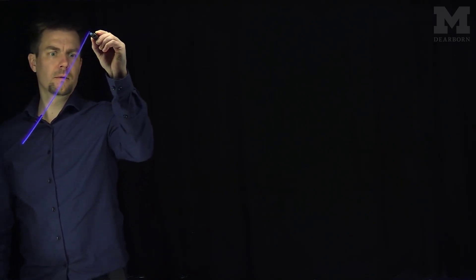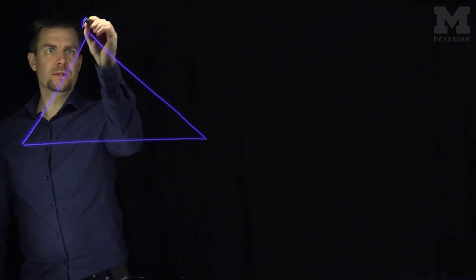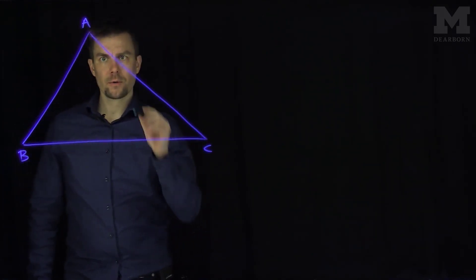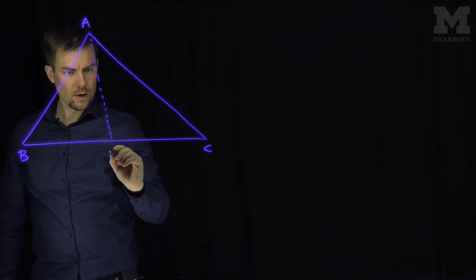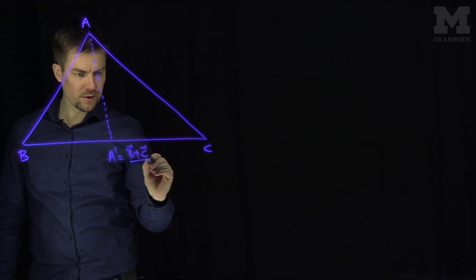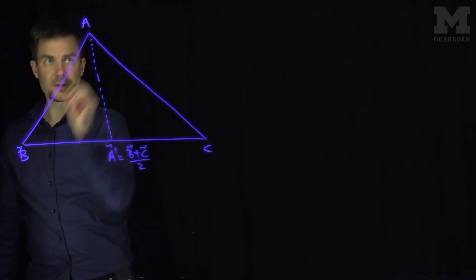If we're given a triangle, let's say this is the vector A, this is the vector B, and this is the vector C. What we'll do is we'll draw the medians. We'll call this A', which is (B + C) / 2 using vector notation. So we'll create all the vertices as vectors.